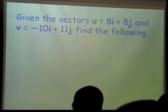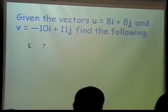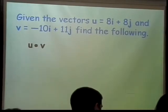For the following, we have two vectors, 8i plus 8j and negative 10i plus 11j. Find u·v. I think you can handle this on your own. For those of you who have trouble seeing what's on the board, I'll write it up here.